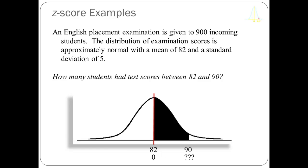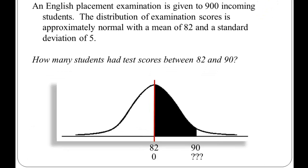You can see here that I've drawn a vertical bar at 82 and shaded in the area up to 90. We're interested in that particular area because the area under a curve is a proportion and can also be used as a probability. If I know the proportion of people that had test scores between 82 and 90, I can multiply that by the number of people who took the exam — 900 — to get an approximation of the number of people with scores between 82 and 90.